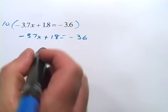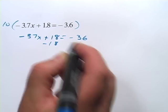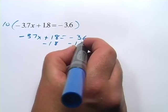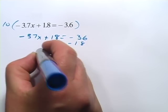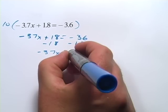Some people find this easier. So first, I want to get the x term alone. I've got this number term, this positive 18, so I'm going to subtract 18 from both sides. I get negative 37x equals, let's see, that's negative 54.